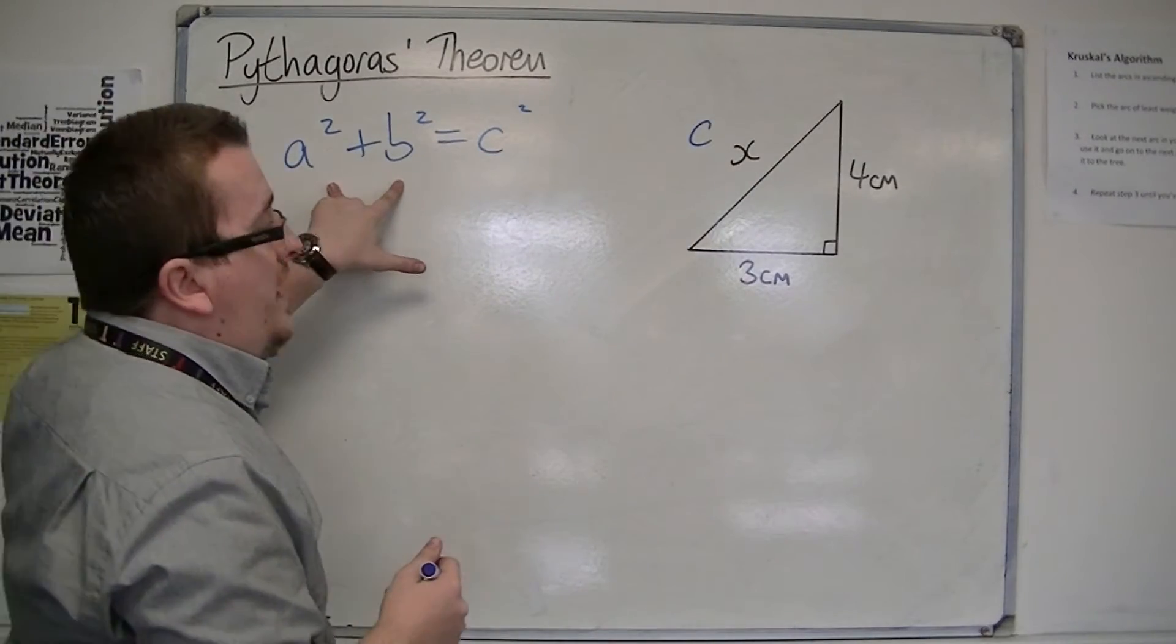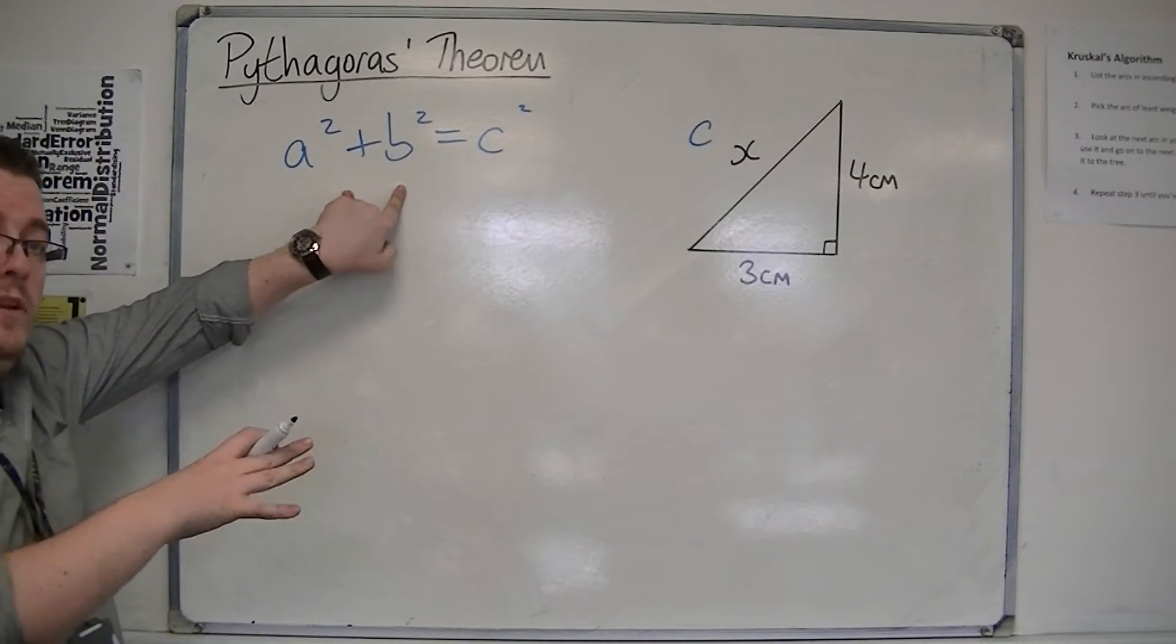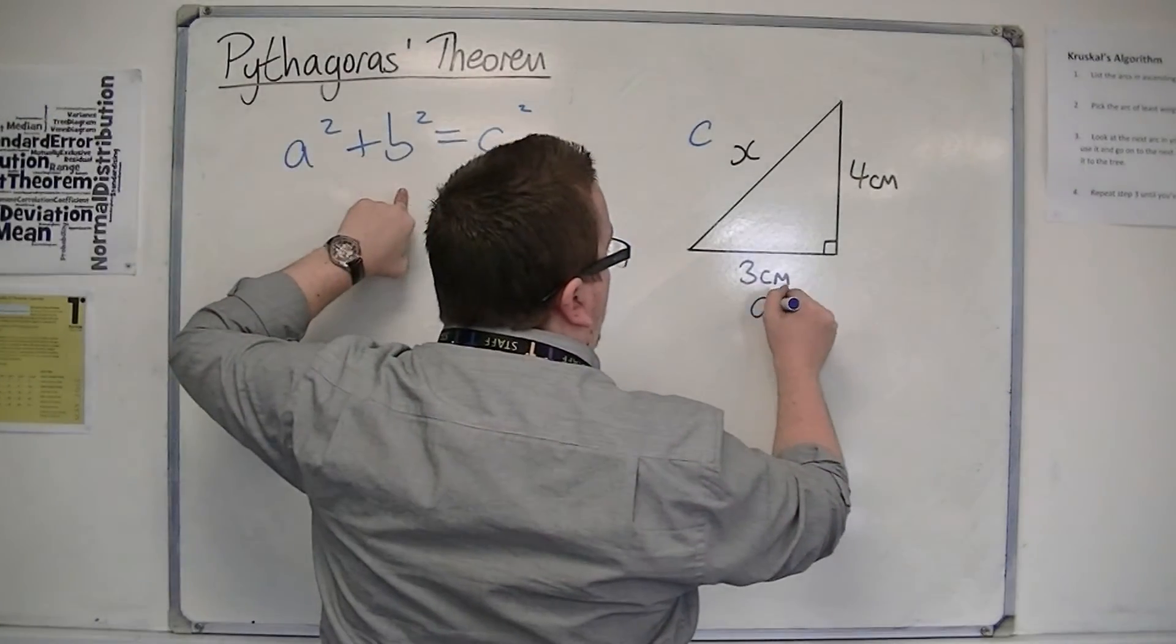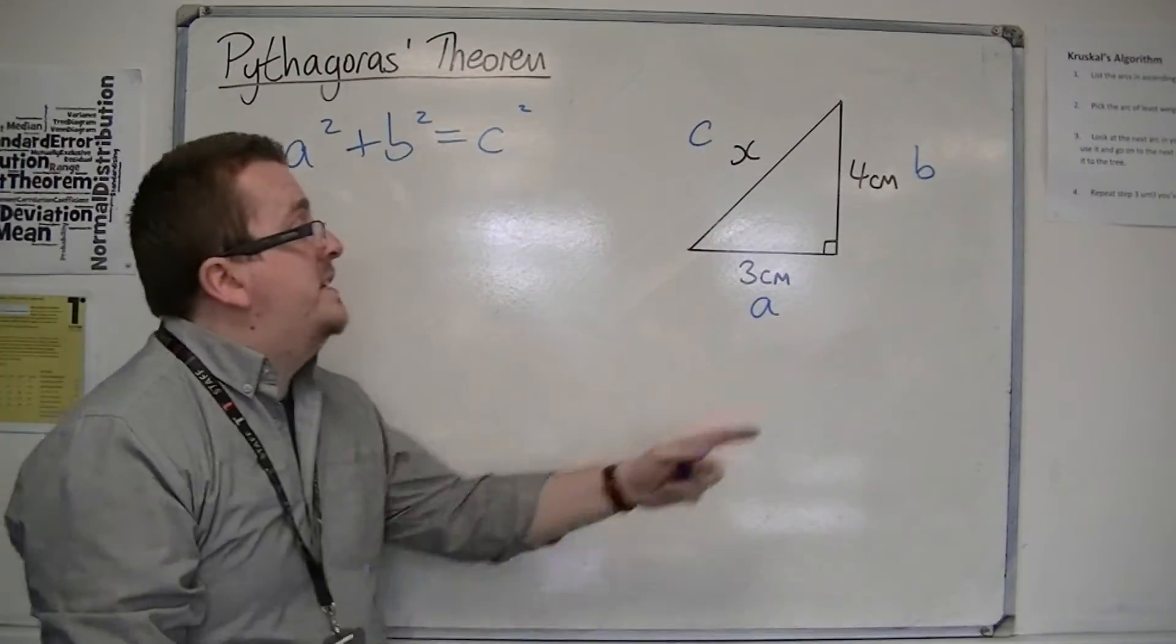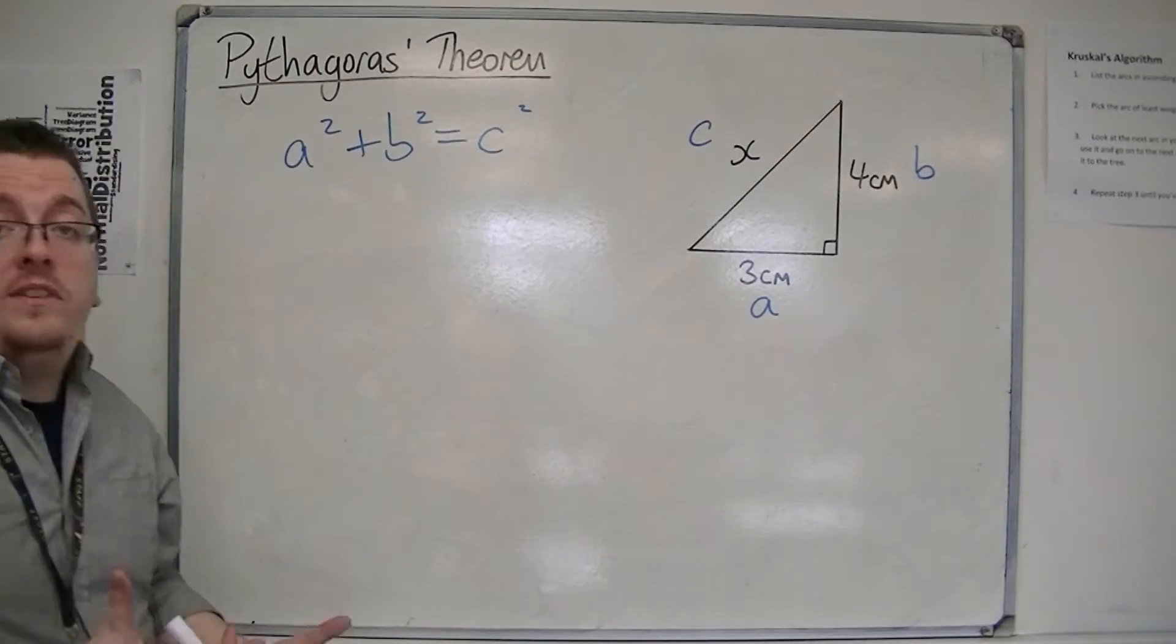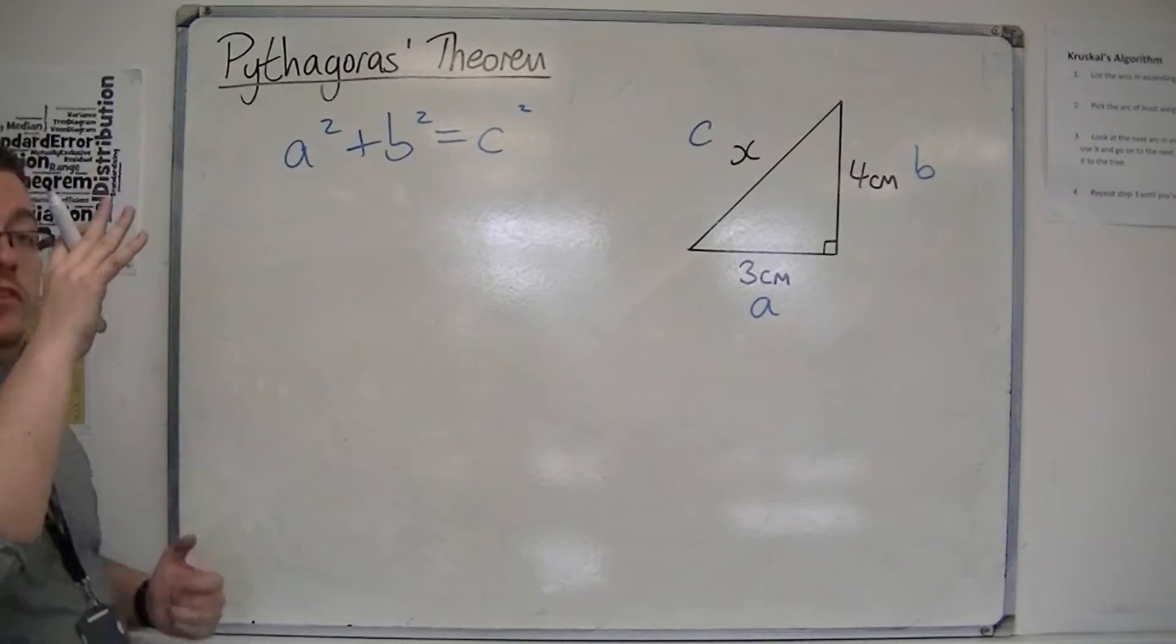Then, the A and the B are either of the other two sides, and it doesn't matter which way round you label them. So, let's call that one A and that one B. But I could just as easily say that was A and that was B, so it doesn't matter which way round. But it's just the C that is the important one.